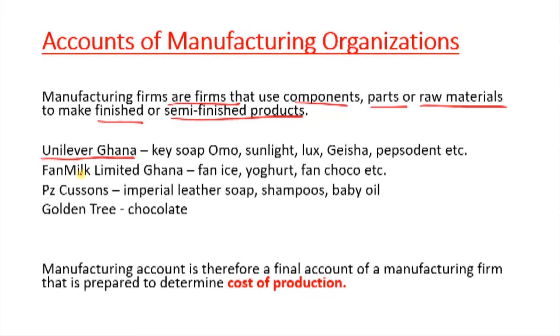Other Unilever products include Omo, Sunlight, Lux, Geisha, and more. I'm sure you use some of these soaps at home. What happens is that the final product you see — like Geisha soap — was manufactured from certain raw materials.